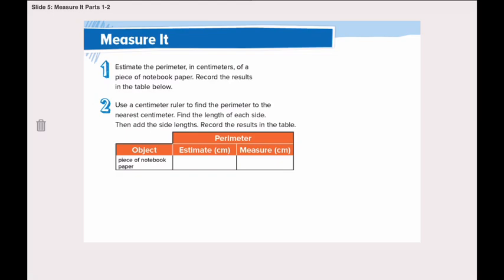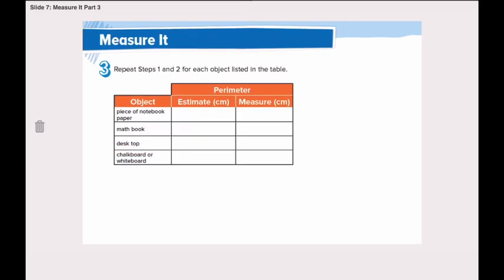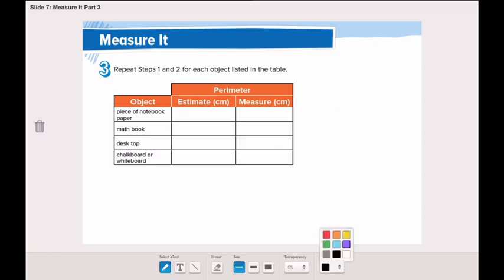Find the length of each side, then add the side lengths, and record again in the table. The third and final step is to repeat steps one and two for each of the objects listed. I'm going to use a piece of paper, my math book — just remember my math book is bigger than yours — a notebook instead of a desktop, and a mouse pad instead of a whiteboard.